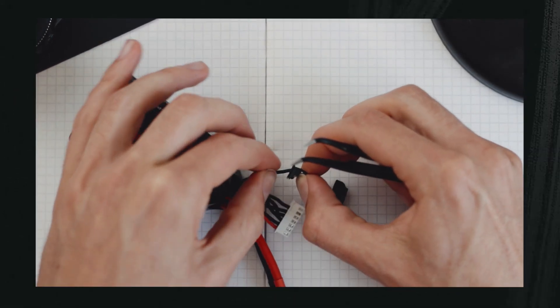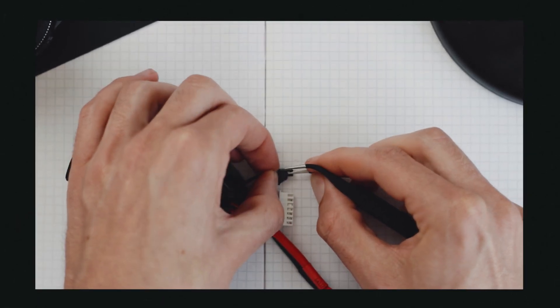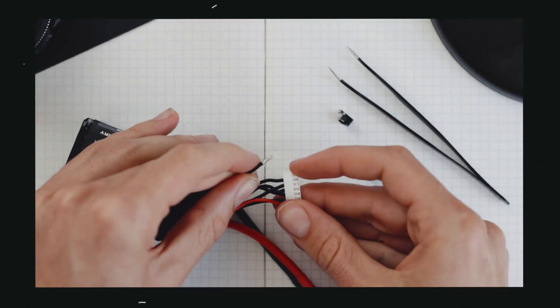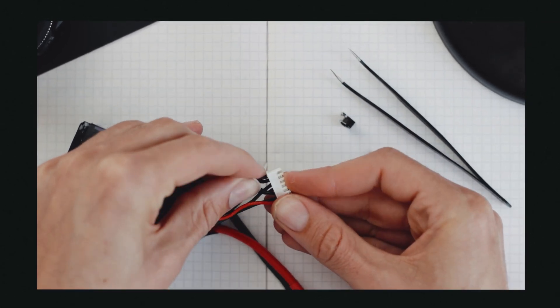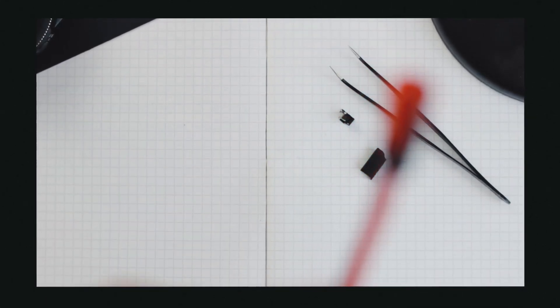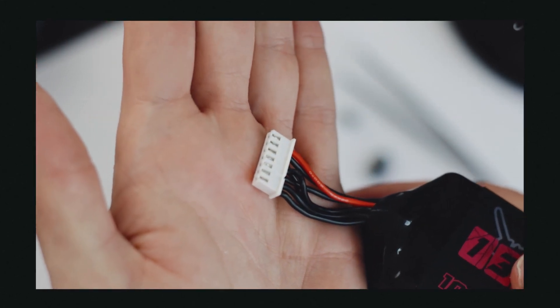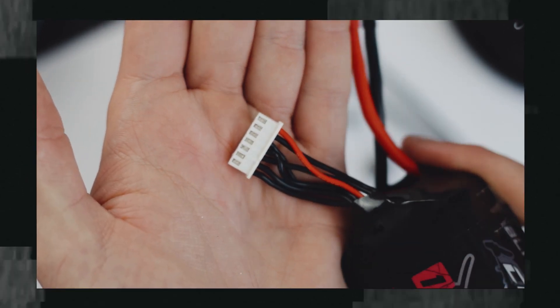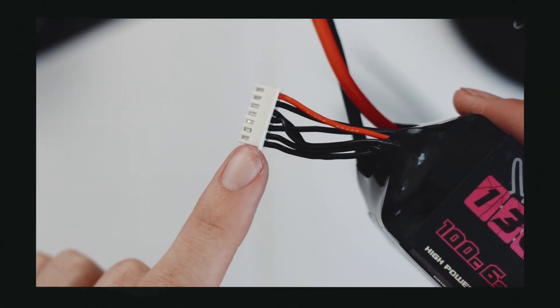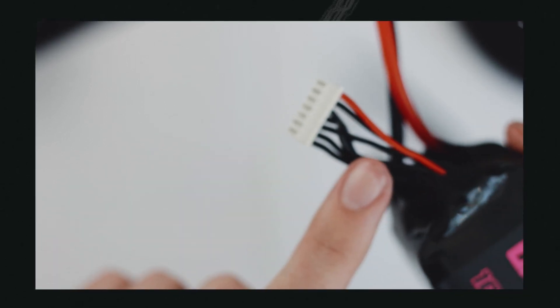You're probably wondering why are there seven leads when I only have a 6S battery, or why would I have five if I have a 4S battery. That's a good question and I will explain that to you in a hot second. So there we go, we've replaced the balance connector and it all works perfectly fine.